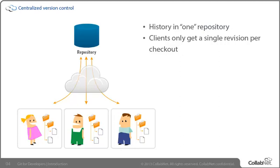When it comes time to publish our changes back based on the work we did with that revision, those changes are published back to that single repository. And that's what most of us have experienced, regardless of what we call that checkout — whether it's a working copy, working space, or review. We still had just one revision, and for all intents and purposes, we spoke to one master repository.